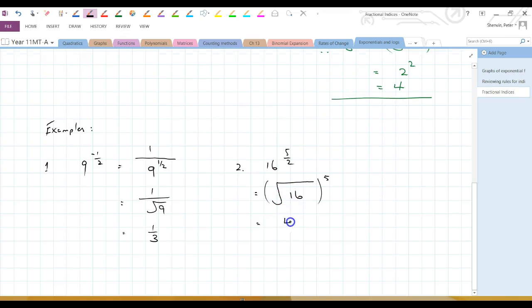Square root of 16, that's 4 to the power of 5. Alright, that's a big number. 4 to the power of 5. 1,024 I'm led to believe is the result there.